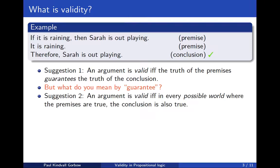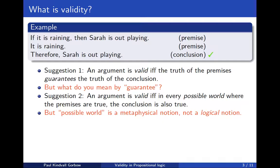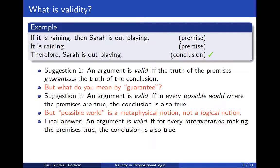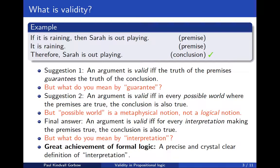So one approach to that would be to say that it's guaranteed if in every possible world where the premises are true, then the conclusion is also true. So the final answer that we take to the question of what is validity is that an argument is valid if and only if for every interpretation making the premises true, the conclusion is also true. But then it remains: what do we mean by interpretation? So that is the task of this lecture to show. And this is a great achievement of formal logic — we can actually give a precise and crystal clear definition of interpretation.